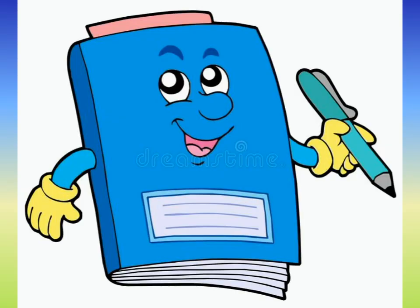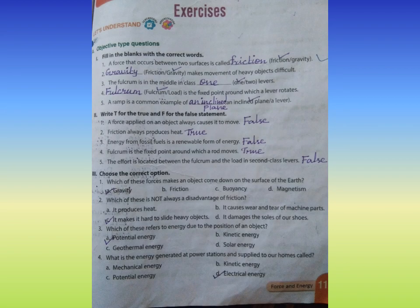Next page. Exercises. A, objective type questions. Roman numeral one, fill in the blanks with the correct words. First one: A force that occurs between two surfaces is called friction.